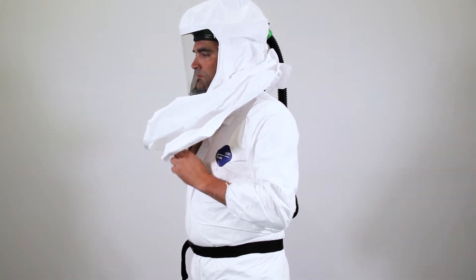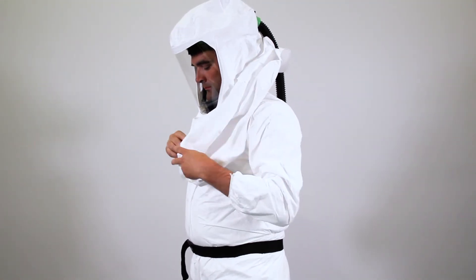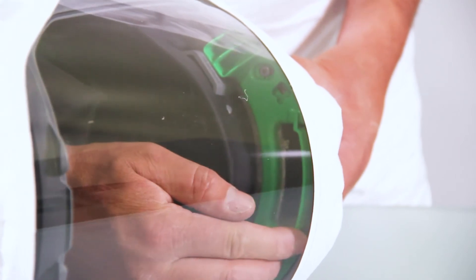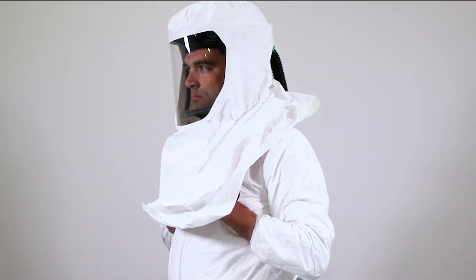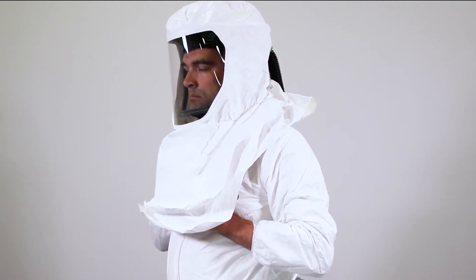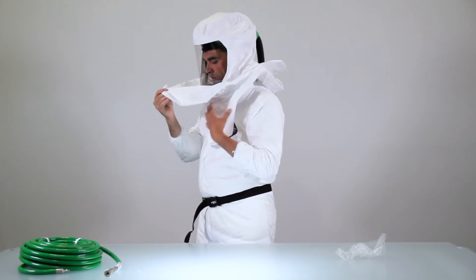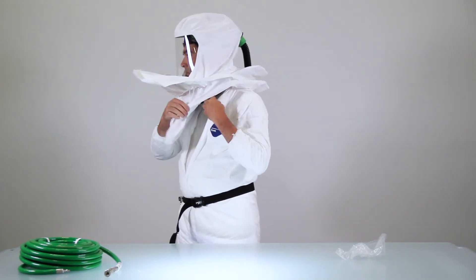take it off and adjust as necessary. After adjusting, put the respirator back on and adjust the air deflector to the desired position. Tighten the inner bib using the toggle until comfortable. Then tuck the inner collar under your coveralls to allow air to flow down your body.